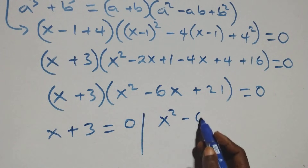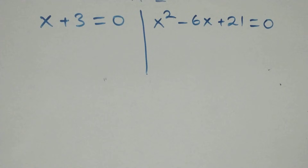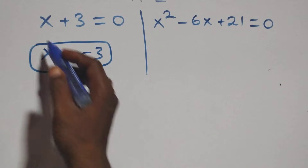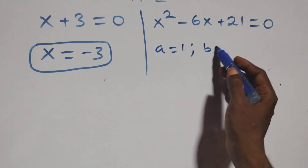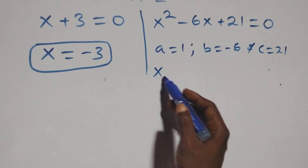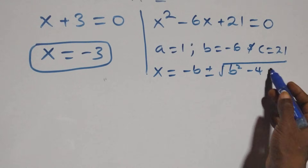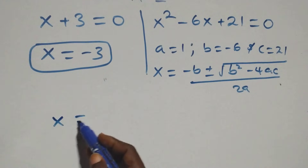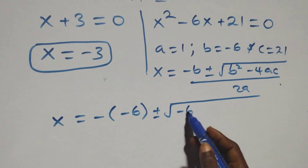We have two possible cases: x plus 3 equals 0, giving x equals minus 3, which is a real solution. Or we have x squared minus 6x plus 21 equals 0. For the quadratic, a equals 1, b equals minus 6, c equals 21. Applying the quadratic formula: x equals minus b plus or minus square root of (b squared minus 4ac), all over 2a. This gives x equals 6 plus or minus square root of (36 minus 84), all over 2.